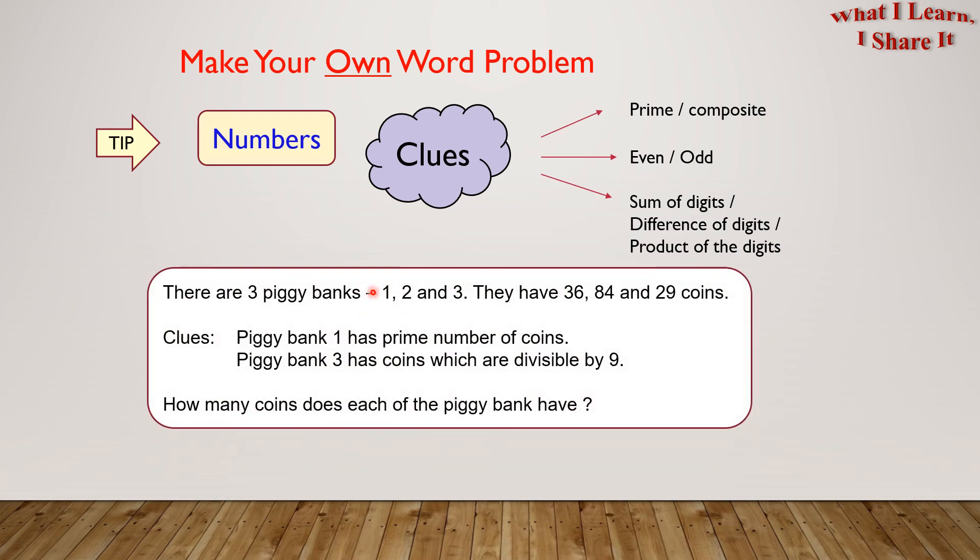There are three piggy banks, 1, 2, and 3. They have 36, 84, and 29 coins. Clues. Piggy bank 1 has prime number of coins. Piggy bank 3 has coins which are divisible by 9. How many coins does each of the piggy banks have?